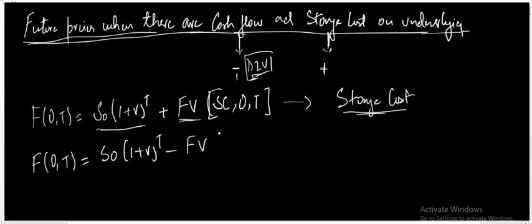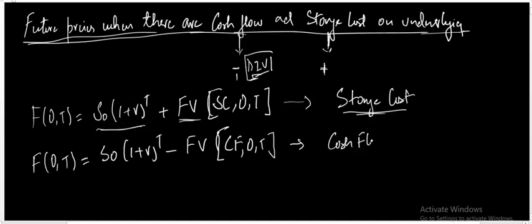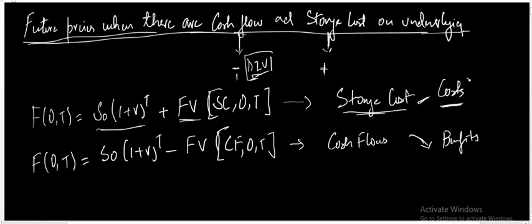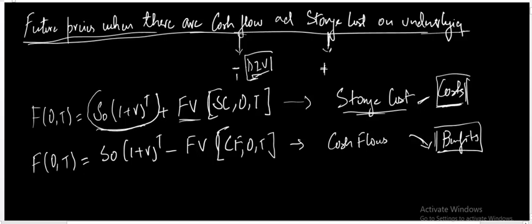We subtract the future value of the cash flows that will be arriving on the particular asset. If we talk about storage costs as the costs and cash flows as the benefits, we will arrive at either a positive or a negative figure. If the costs are more, we will result in a positive figure, while if the benefits are more, we will result in a negative figure to be added to the compounded spot price.